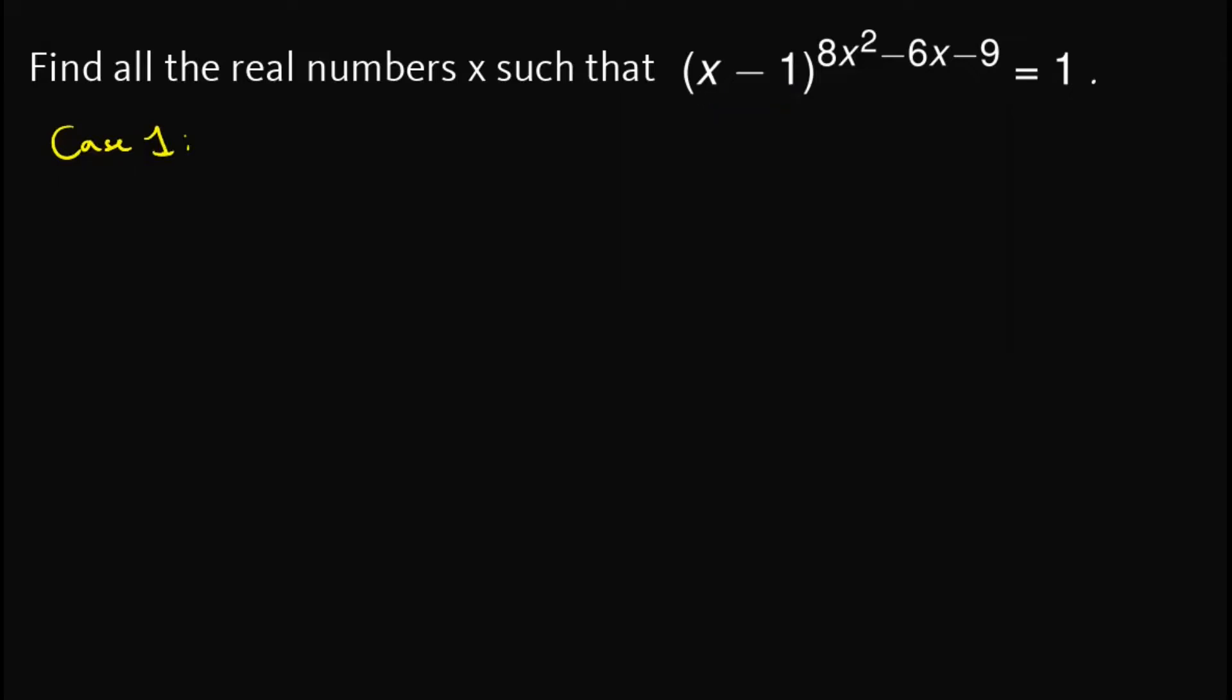The first case is case 1 if this one out here is equal to 1. So that will happen if x minus 1 is equal to 1, and this will give us x equals 2. Now note that the reason behind this is that when we raise 1 to any exponent, whether that is negative or positive, the outcome is still 1. So that is our first value of x.